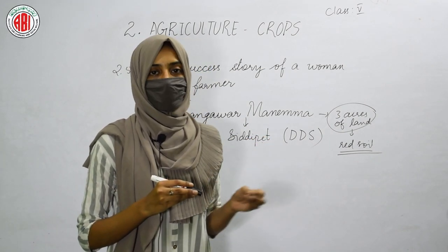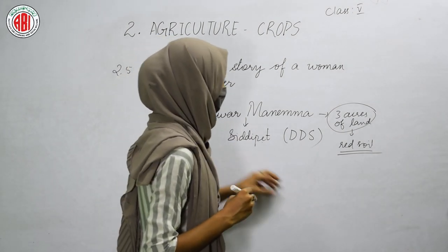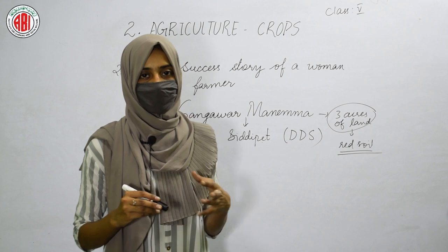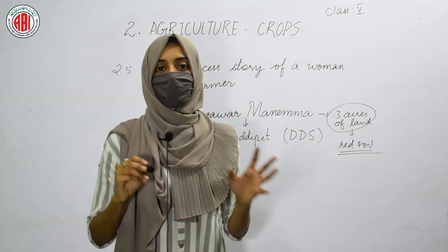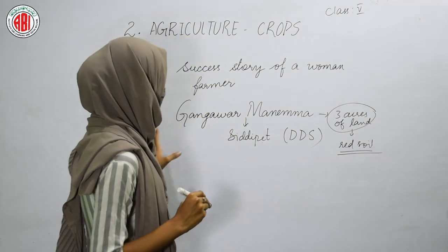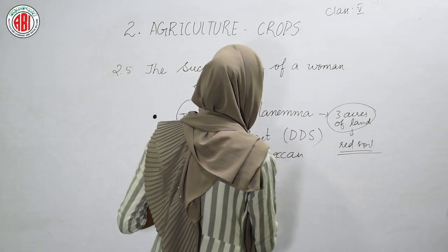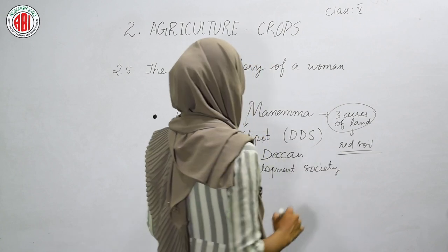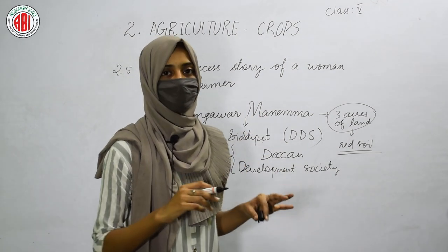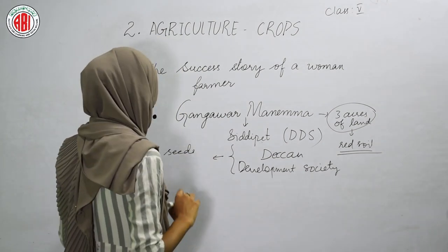When she grew crops on this red soil land it did not give much yield, causing her many problems. Only when rain came could she grow crops like jowar and millet, and even then in less quantity. She did not know how to solve this problem until she met a society called the DUCK and Development Society.